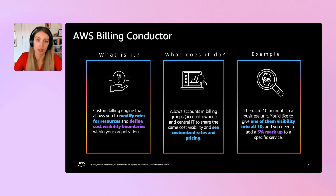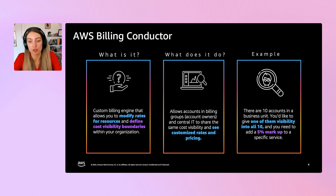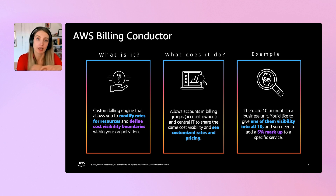Billing Conductor also offers the ability to enforce and restrict cost visibility boundaries within your AWS organization based on the billing group setup that you configure and which account you set up as the primary account. If you are a FinOps professional and you would like to show a business unit that has 10 accounts a 5% markup on a certain service, you can leverage Billing Conductor to set up that 5% markup, set that 10-account limit, and create what functions like a sub-organization within the billing tools so that they see the pricing you want them to see.